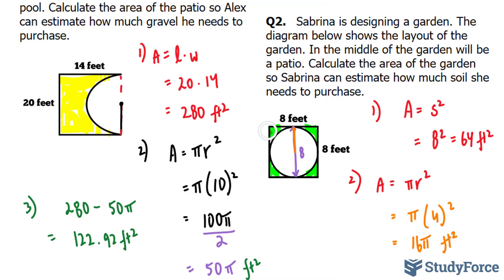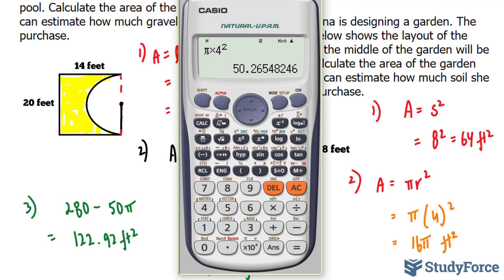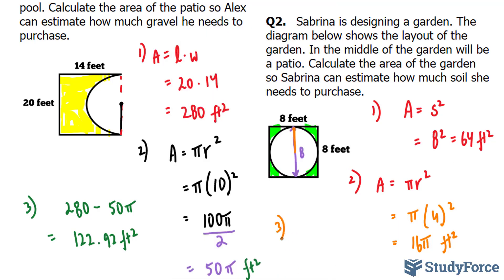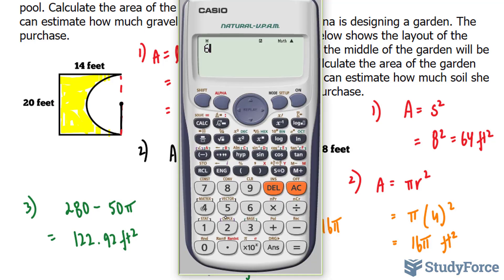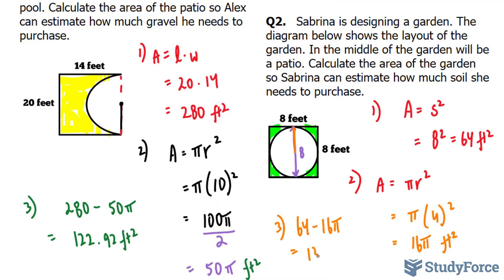Now I need to find what's shaded in green, so I'm going to subtract my bigger number from my smaller number. Now 64 is bigger than 50.26. So I'm going to subtract from my third step, 64 minus 16 pi. 64 minus the previous answer that I got gives me 13.73, 13.73 feet squared. So what does this mean for Sabrina? This means that Sabrina needs to purchase 13.73 feet squared of soil in order to create this garden that she's looking for.